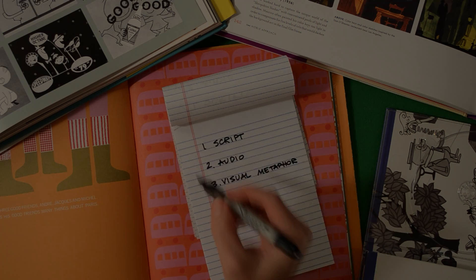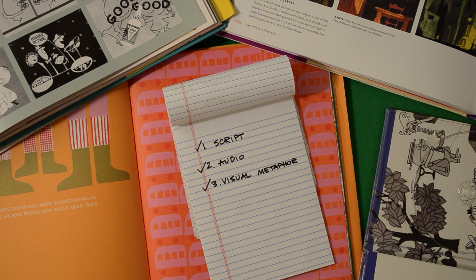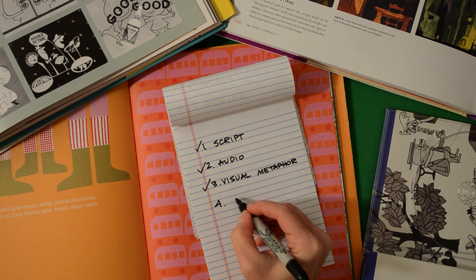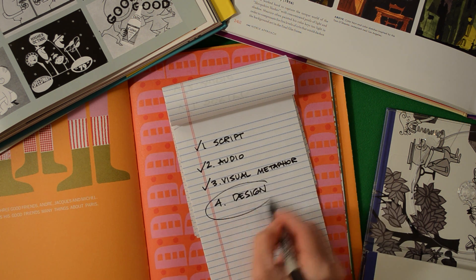Okay, so we have the script, audio, and a visual metaphor. The next step in visual development is to design the characters and environments of the animation.